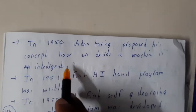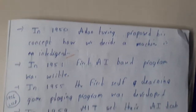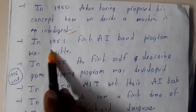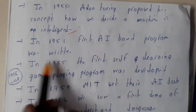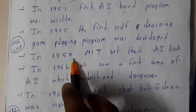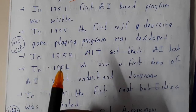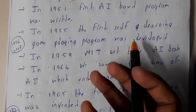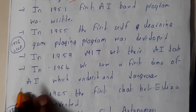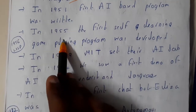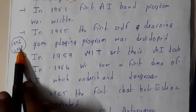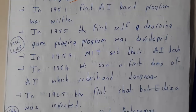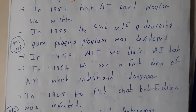In 1951, the first AI-based program was written. In 1955, game-playing programs such as chess were developed — the first self-learning game-playing code was written. In 1956, the programming language LISP was introduced, which is used for artificial intelligence and is still used by some today.